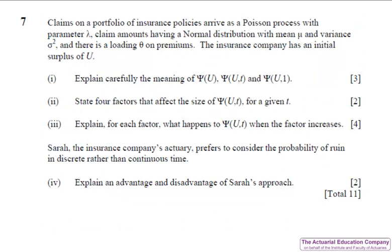Question seven is 11 marks of pure bookwork testing ruin theory from chapter nine of the notes. Part one asks us to carefully explain the meaning of the probabilities of ruin. This has been asked in September 2008, April 2009, September 2011, April 2012 and September 2013 and so any student who's bothered to look at past questions should have got these marks easily. However those previous questions asked us for the definitions which were the probability the surplus process is less than zero i.e we're ruined for some time where the time is greater than zero and obviously we would have had to define what the surplus process was. Whereas this question says explain carefully so you could have done that in words instead.